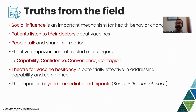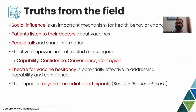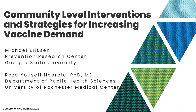In summary, social influence is an important mechanism for behavior change. Patients listen to their doctors and healthcare providers about vaccination, and people talk with their network members about decisions, creating a cascade of social influence that can be activated. Effective interventions should address the four pillars: improving capability, confidence, convenience, and contagion. Theater for Vaccine Hesitancy is a potentially effective intervention to improve conversation and facilitate capability and confidence in trusted messengers, with impact going far beyond immediate participants.